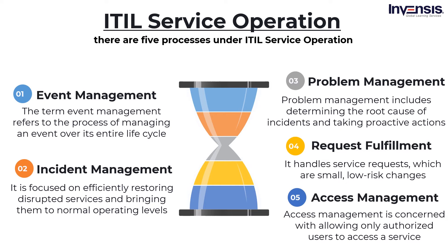There are five processes under idle service operation. First is event management: the process of managing an event over its entire lifecycle, involving detecting events, filtering them, responding to them, and logging them. Next is incident management: focused on efficiently restoring disrupted services to normal operating levels in order to reduce the impact of the interruption on the business. Third is problem management: determining the root cause of incidents and taking proactive actions to guarantee that they do not happen again. Fourth is request fulfillment: it handles service requests, which are small, low-risk changes like creating new user IDs, changing passwords, and so on, that aren't part of a company's main operation. Fifth is access management: concerned with allowing only authorized users to access a service and preventing unauthorized users from accessing them.